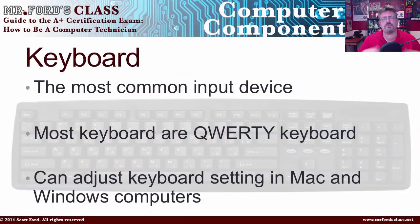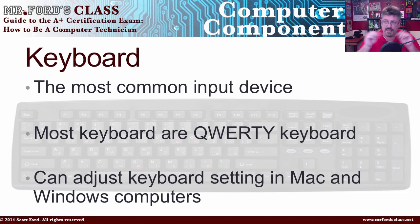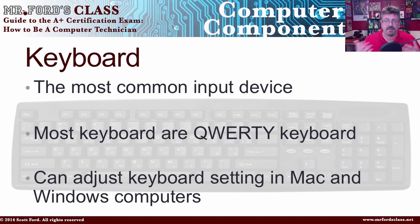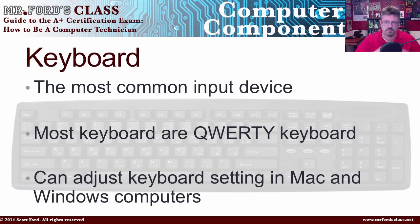The keyboard is the most common input device and it predates the mouse. When computers were first on the scene, there was no keyboard — it was little switches. Then the keyboard came around. There was no mouse either, because at the time the operating system was all text-based, so you couldn't click on things and move the mouse around.